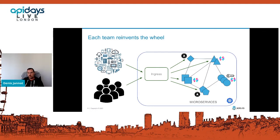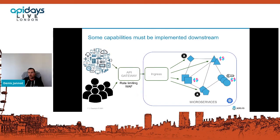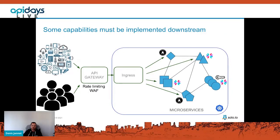Very quickly, when you start to have more and more services deployed in your cluster, you discover that each team reinvents the wheel. Some web applications are secured with OIDC, some other APIs are secured with JWT tokens or API keys. There are also a lot of other security aspects generally configured outside of the Kubernetes cluster, like rate limiting and web application firewalling.